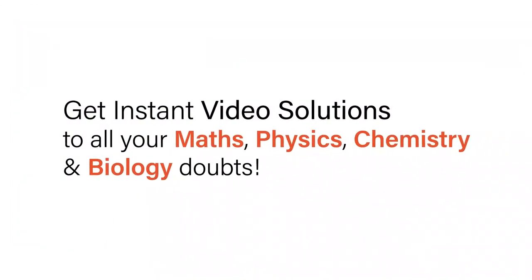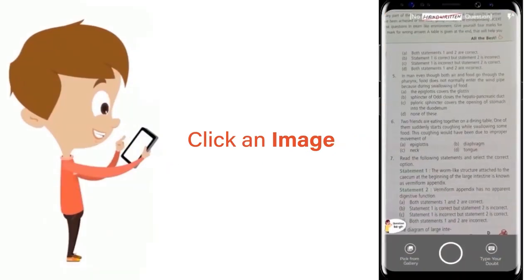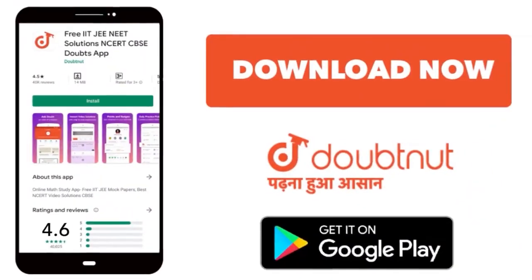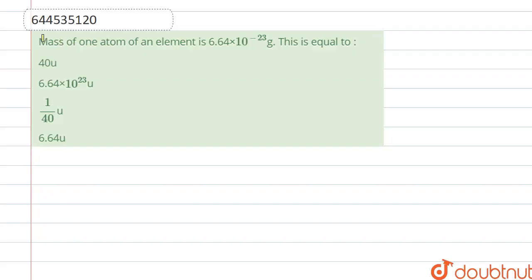With Doubtnet, get instant video solutions to all your maths, physics, chemistry, and biology doubts. Just click the image of the question, crop the question, and get instant video solution. Download Doubtnet app today. Hello everyone, here's the question: mass of one atom of an element is 6.64 × 10^-23 gram.